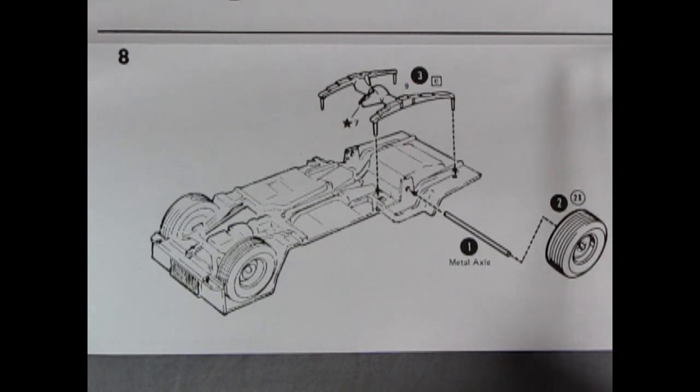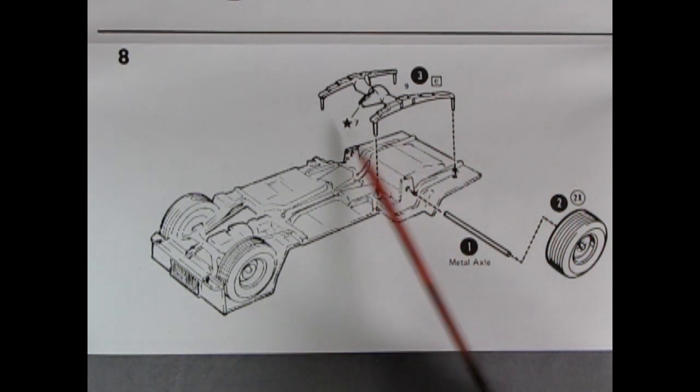Step eight shows the final assembly on our chassis with our differential and springs being dropped into place. The metal axle slips through these locators and then our wheels go on to the back.